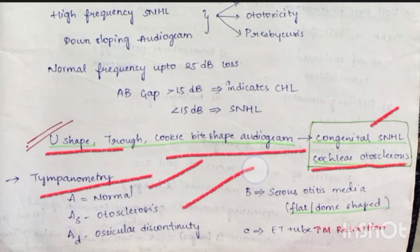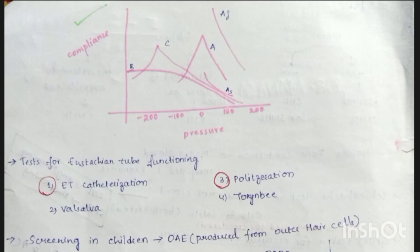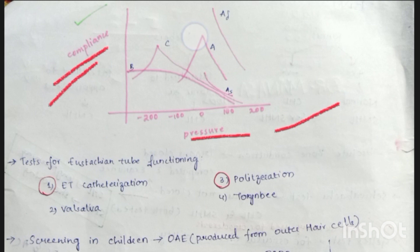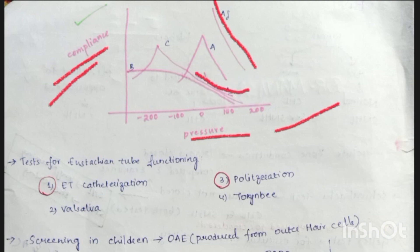The tympanogram graph is plotted between compliance (y-axis) and pressure (x-axis). Graph A is normal. In ossicular discontinuity, compliance is increased — graph AD has increased compliance. In otosclerosis, compliance is decreased — graph AS has decreased compliance. Flat or dome-shaped graph B represents serous otitis media. Graph C indicates Eustachian tube blockage leading to tympanic membrane retraction.